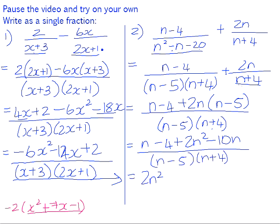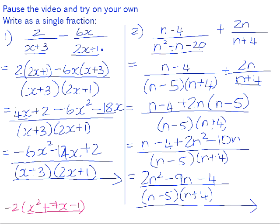We have 2n squared minus 9n minus 4 all over (n-5)(n+4). 2n squared minus 9n minus 4 does not factorize, so that won't simplify any further. So there's our final answer.